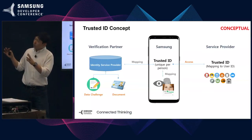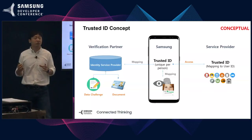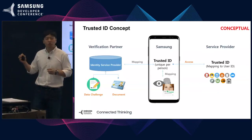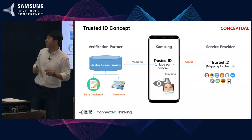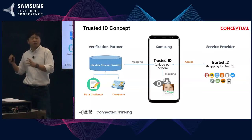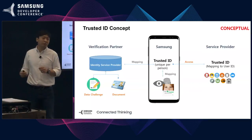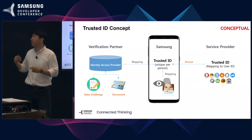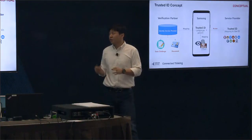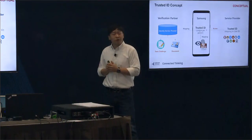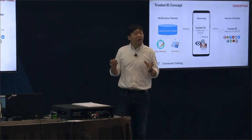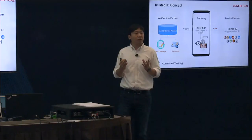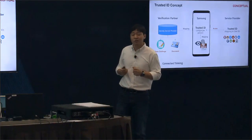In order to pursue this vision, it's important that we create an ecosystem around partners who need to supply various technologies — for instance, on the verification front. We also need to work with service providers to design and think about how we can innovate and prepare new services in this new realm. This is the vision we have for Samsung Pass, and I really wanted to share this with you today so that we can come together to think about how we can innovate and design the next generation of services.